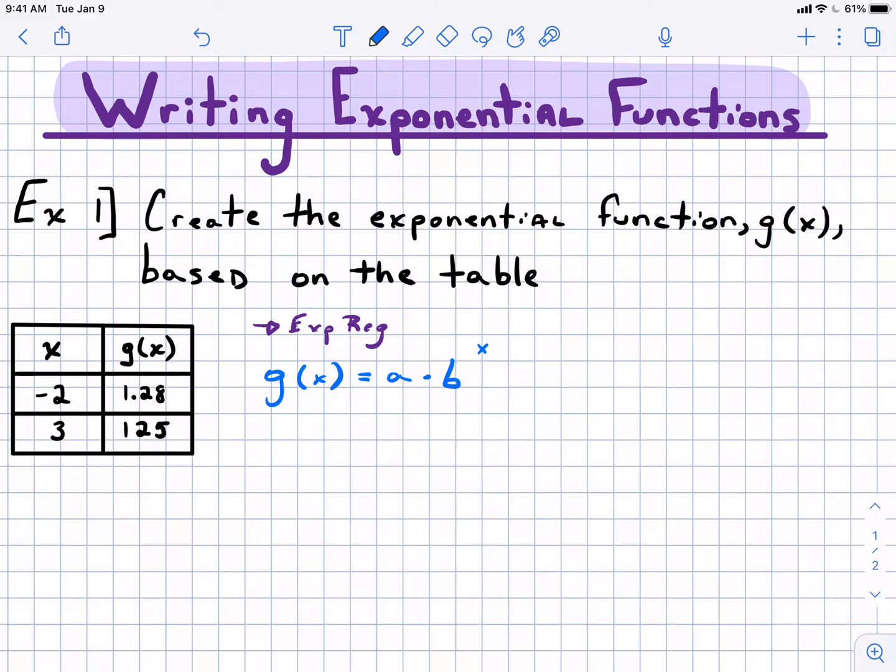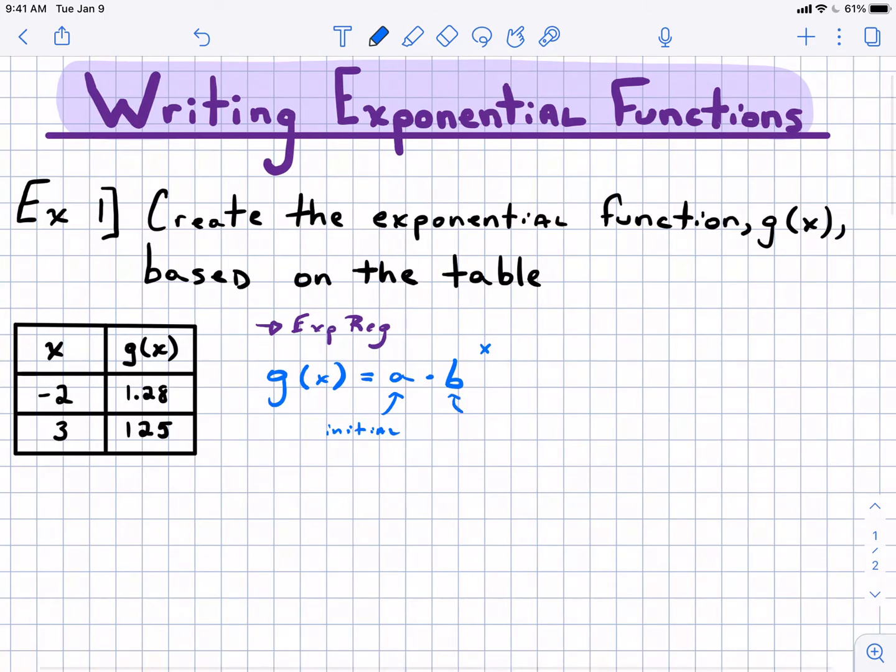Covered in the previous video and in exponential functions in general is the idea that a is our initial value, the y-intercept of the function, and b is what we call the common multiplier, the base, common ratio. I usually refer to it as the common multiplier.